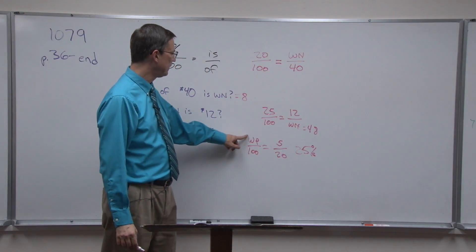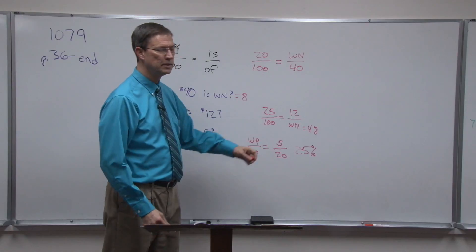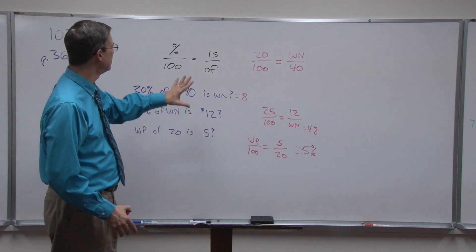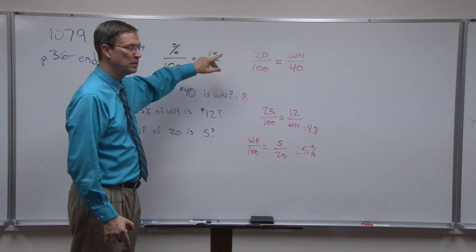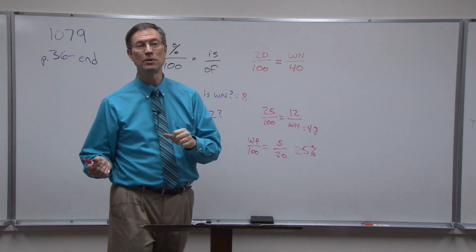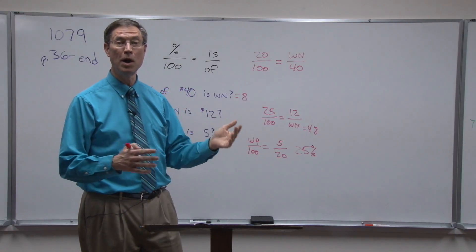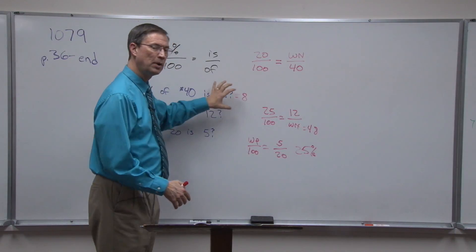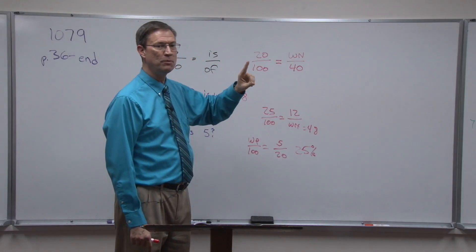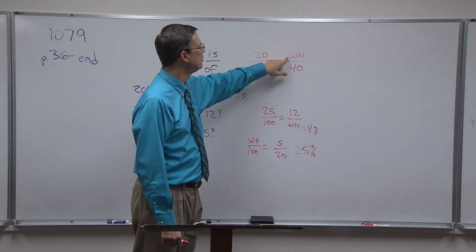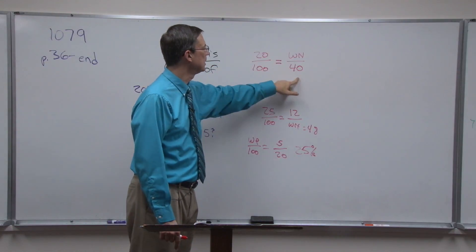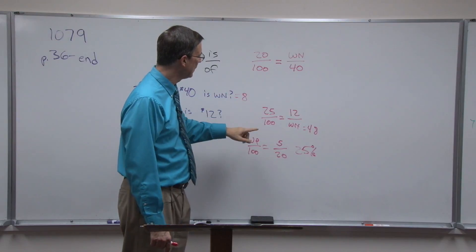So 25 percent would be the same. All right, so this method works. If you just stick with this one method, memorize percent over 100 equals is over of, take whatever problem they give you, plug it into the ratio. Anytime you have a ratio, whatever number is missing, cross multiply the two numbers that are across from each other, kitty corner, divide by the other corner.